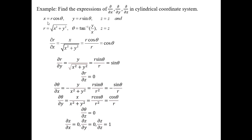First, the transformation equations: x = r cos θ, y = r sin θ, z = z. The inverse transformations are r = √(x² + y²), θ = tan⁻¹(y/x), and z = z.